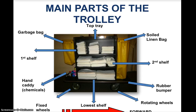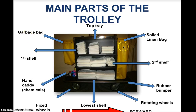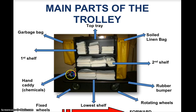Looking at the trolley picture, this is a basic trolley found in any hotel housekeeping department. It has a top tray and two yellow-colored bags — a small one for collecting garbage and a larger one for collecting soiled linen from every room — along with first, second, and third shelves. There is also a rubber bumper, a set of rotating and fixed wheels, and a hand caddy used to carry all cleaning chemicals and manual cleaning equipment.